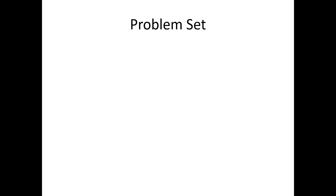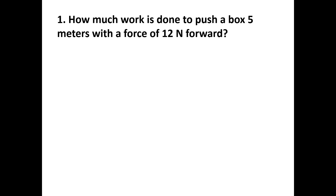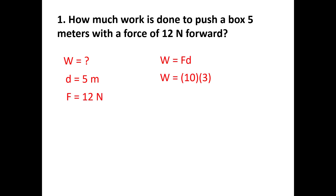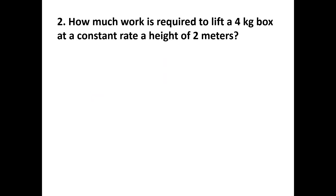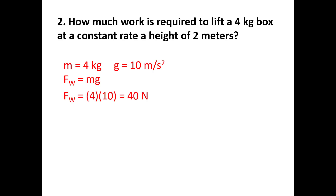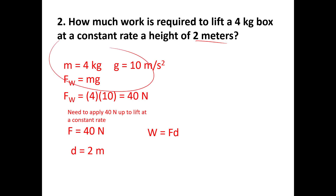Problem set: First, how much work is done pushing a box 5 meters with 12 newtons? W = 12 × 5 = 60 joules. Second, how much work is required to lift a 4-kilogram box 2 meters? First find weight: 4 × 10 = 40 newtons. Then W = 40 × 2 = 80 joules.